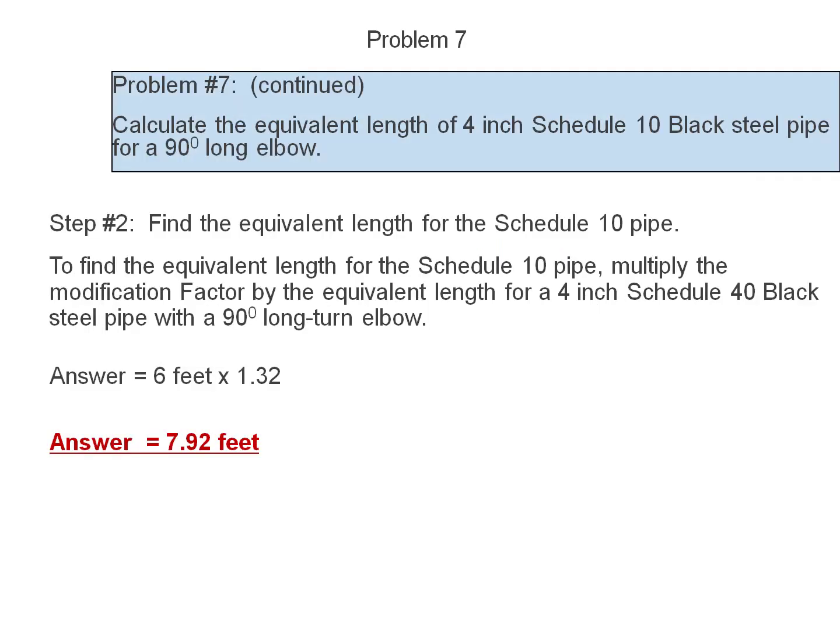Step 2. Find the equivalent length for the Schedule 10 pipe. To find the equivalent length for a Schedule 10 pipe, multiply the modification factor by the equivalent length for a 4 inch Schedule 40 black steel pipe with a long turn elbow. The answer is 6 feet times the factor of 1.32 will equal 7.92.